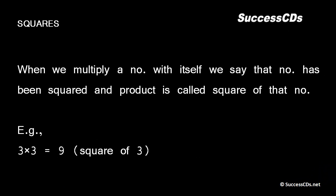What is a square? When we multiply a number with itself, we say that number has been squared, and the product is called the square of that number. For example, 3×3 = 9, which means the square of 3 is 9.